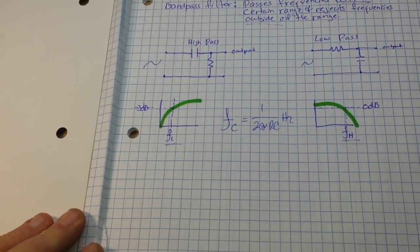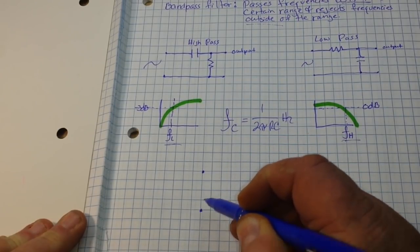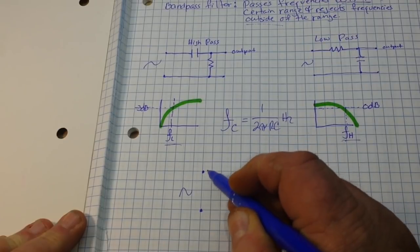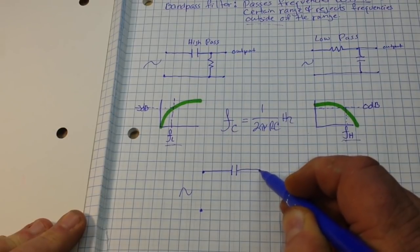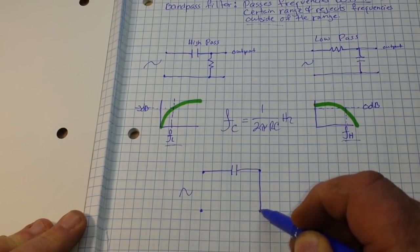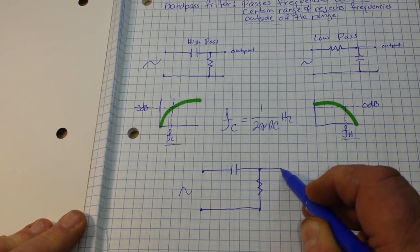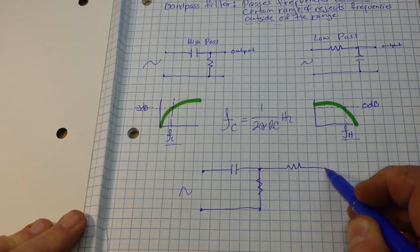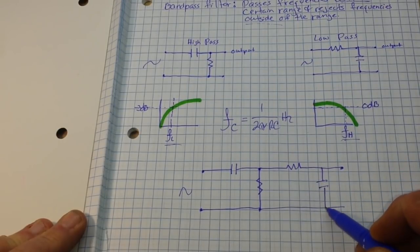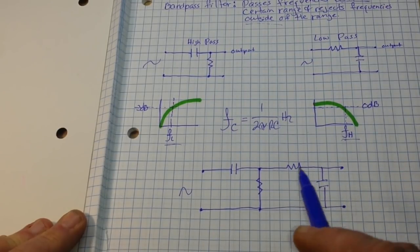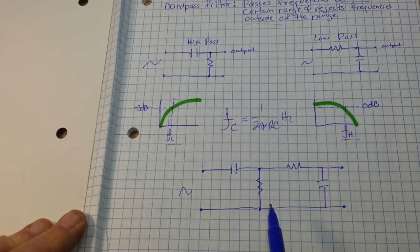Because when we make our bandpass filter, here's our input. We're going to have a capacitor, and then a resistor that goes to ground. And then we're going to have another resistor. There's our output. There's our ground. And then we're going to have the parallel capacitor here. So what you see here is simply a combination of the high pass and the low pass, and therefore we have the bandpass.